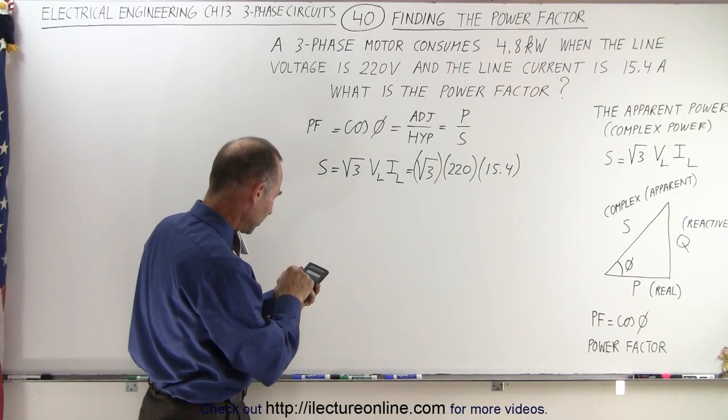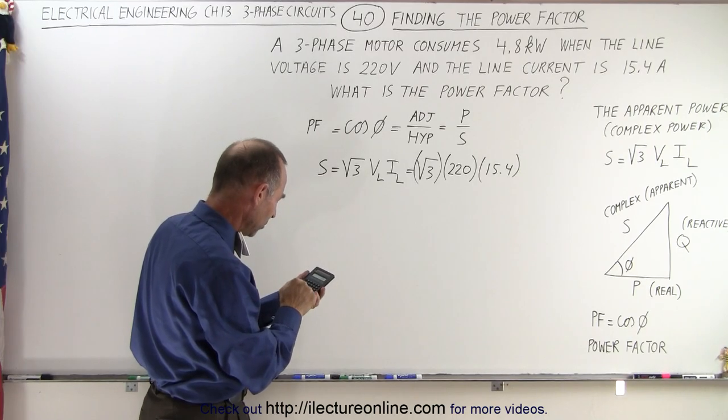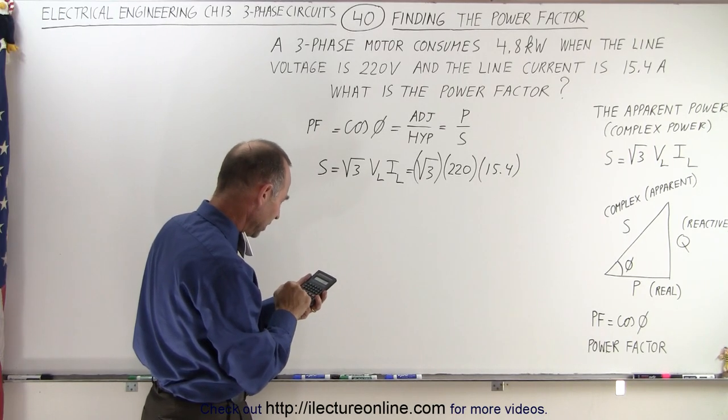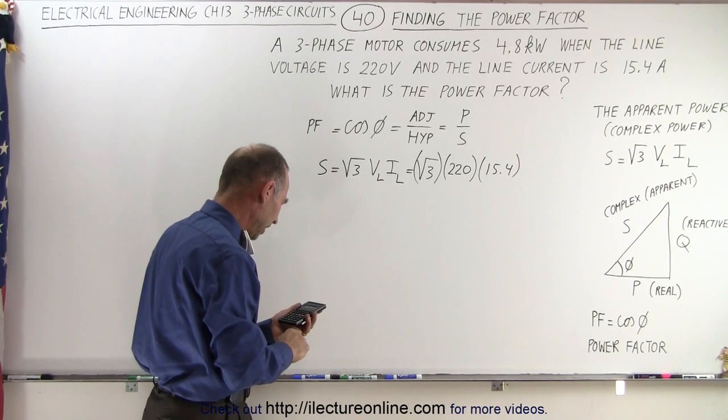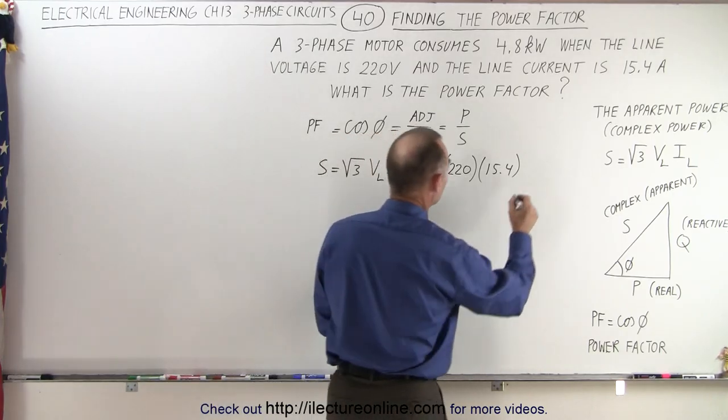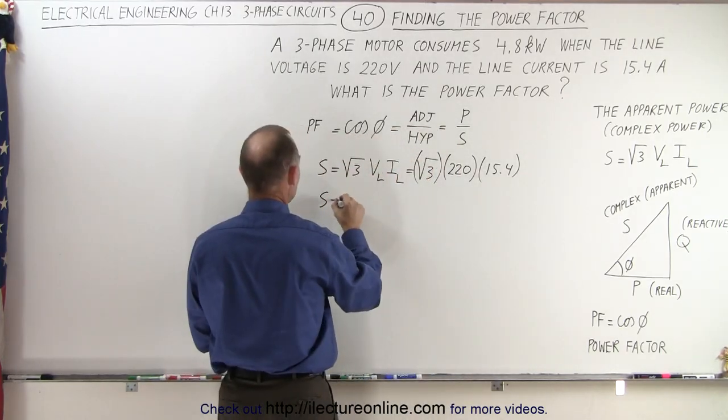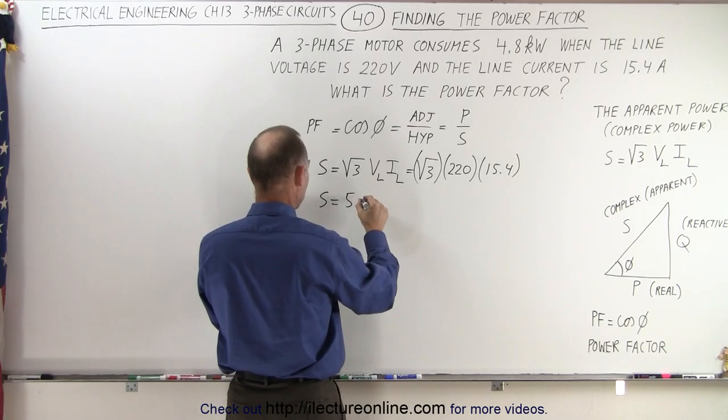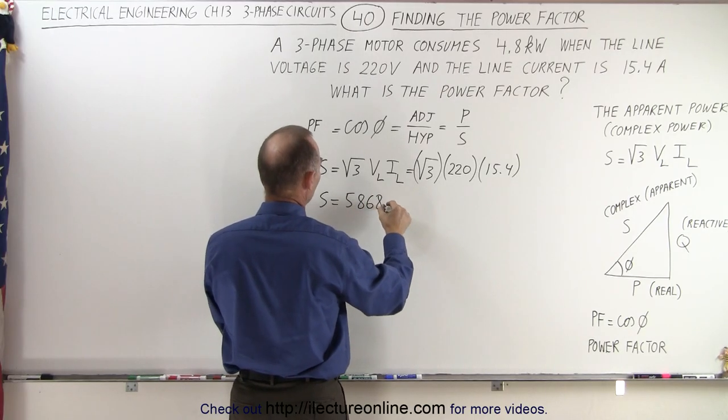So we take the square root of three, multiply times the voltage, multiply times the current, and we get 5868.2. So S equals 5868.2.